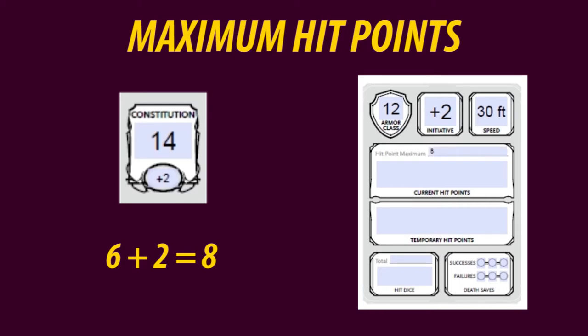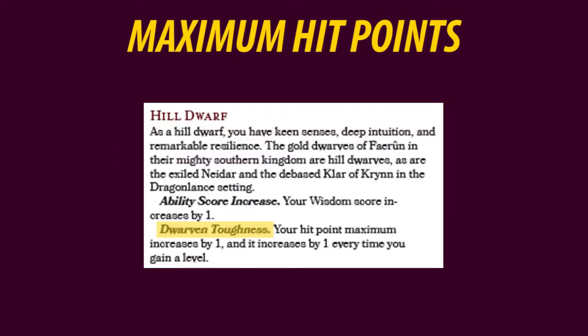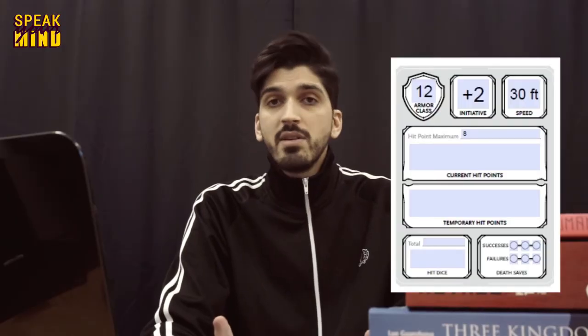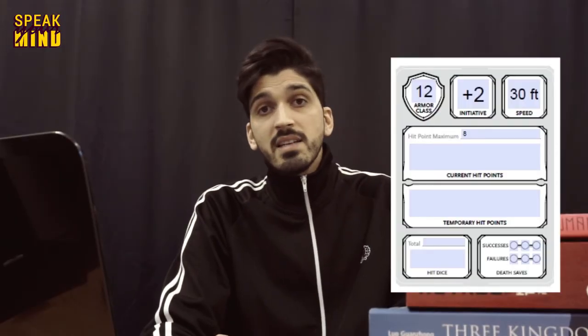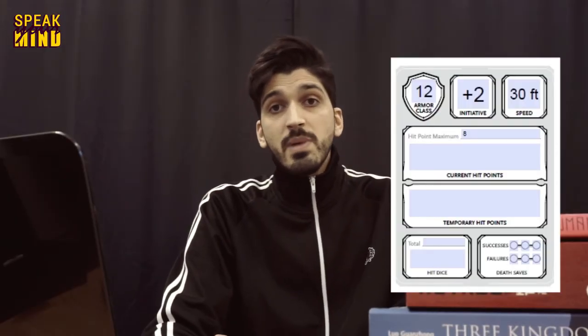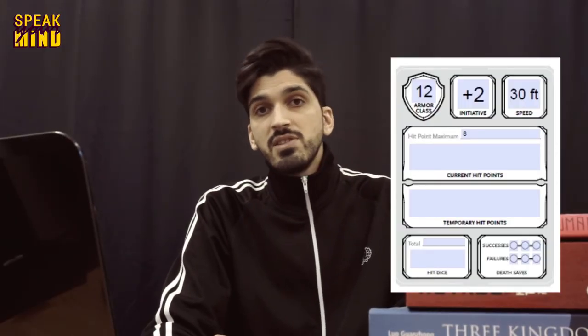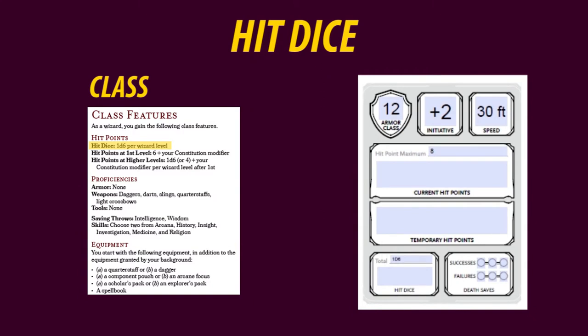My guy seems pretty darn fragile. Some racial features can modify this number — hill dwarves, for example, get an additional hit point increase of 1. Temporary hit points can be ignored, as they only activate with certain spells and class features. The hit dice is also found on your class features; for a wizard, it's a 1d6.